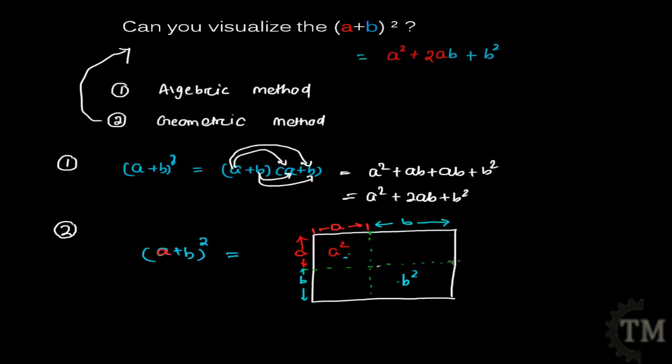Similarly, if you calculate the area of this rectangle, this length is b and this length is a, so its area will be ab. So the total area is a² + b² + ab + ab, which equals a² + b² + 2ab.